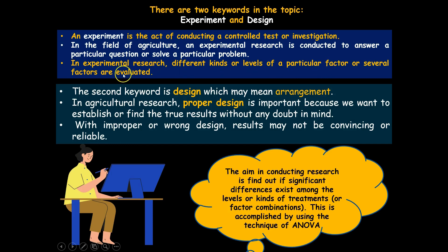The second keyword is design, which means the arrangement of treatments — arrangement of groups of comparison, arrangement of different varieties, different breeds of animals, or different machines in agricultural research. Proper design is important because we want to establish and find true results without any doubt.